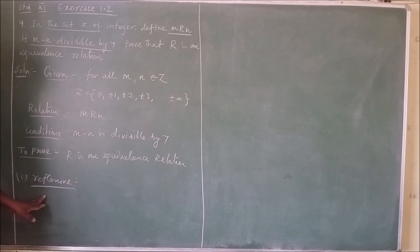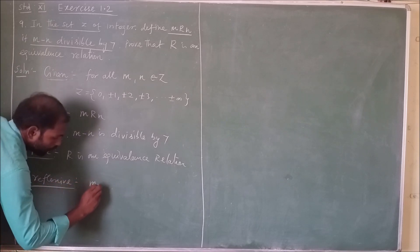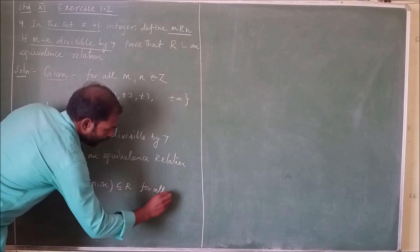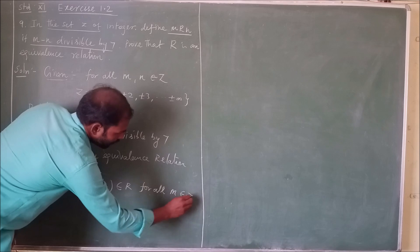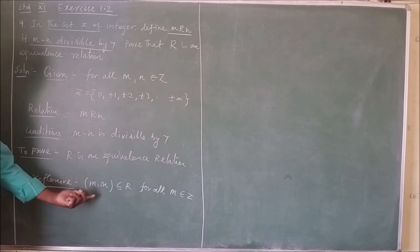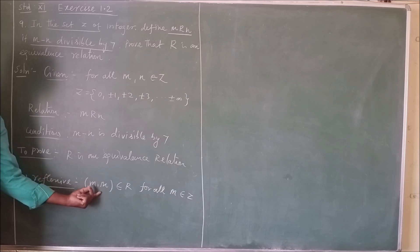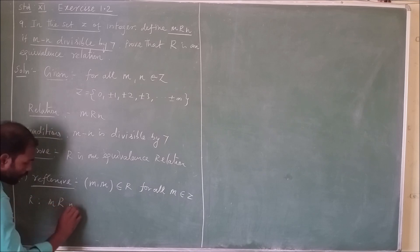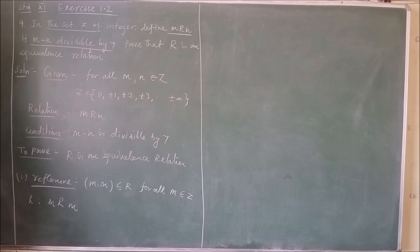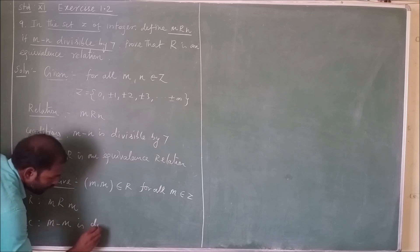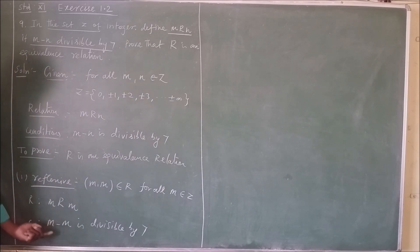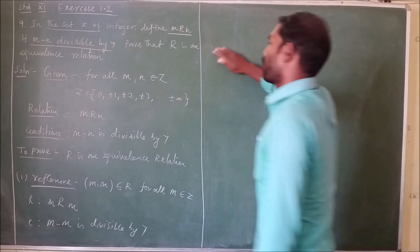What is reflexive? The basic definition for reflexive is: the pair (m, m) belongs to R for all m belonging to Z. In terms of our relation, this means m is related to m. The condition becomes: m minus m is divisible by 7. Now we have to check whether this condition is satisfied.